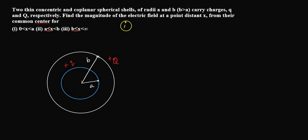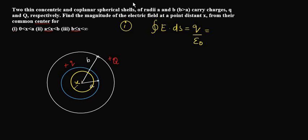The first case: the value of x is less than a but greater than zero. We draw a Gaussian surface whose radius is less than a. Applying Gauss's law, the integral of E·dS equals Q enclosed divided by epsilon naught. Here the charge enclosed within the Gaussian surface is zero, so the total electric field is zero. This is the answer for the first part.